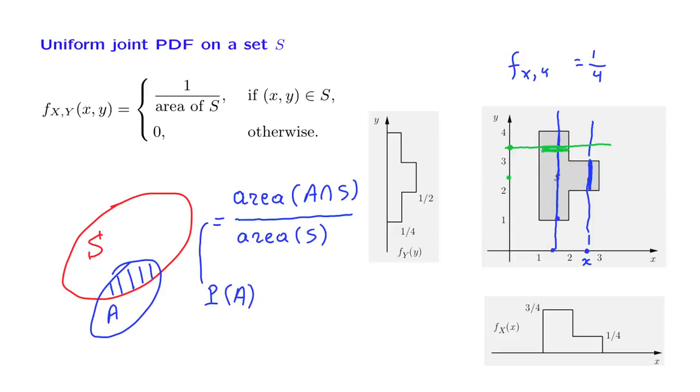But if we were to take a line somewhere here, we integrate a value of 1 fourth over an interval of length 2. And so the result would be 1 half. So we have recovered from the joint PDF, the marginal PDF of X, and also the marginal PDF of Y.